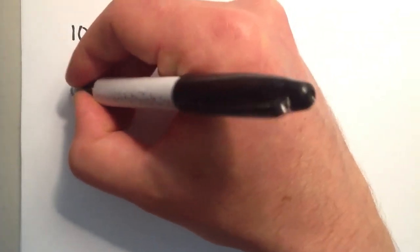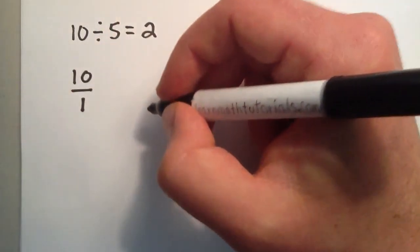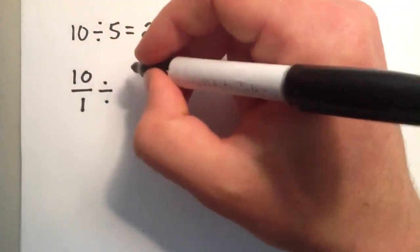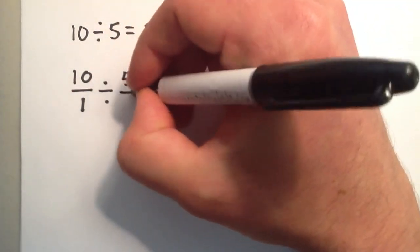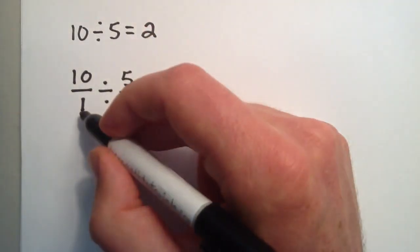Now let's write this as a division of fractions. We can write 10 as a fraction by writing it as 10 over 1, and then we can divide it by 5, which is the same as 5 over 1. So we've written this as a division of fractions.